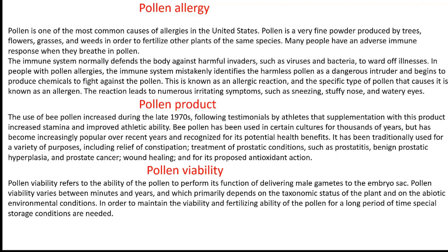Pollen viability: every pollen grain's viability varies — it is not the case that all pollen grains have the same viability period. Pollen viability refers to the ability of pollen to perform its function of delivering male gametes to the embryo sac. Pollen viability varies between minutes and years, and primarily depends on the taxonomic status of the plant and abiotic environmental conditions. Special storage conditions are needed to maintain the viability and fertilizing ability of pollen for a long period.